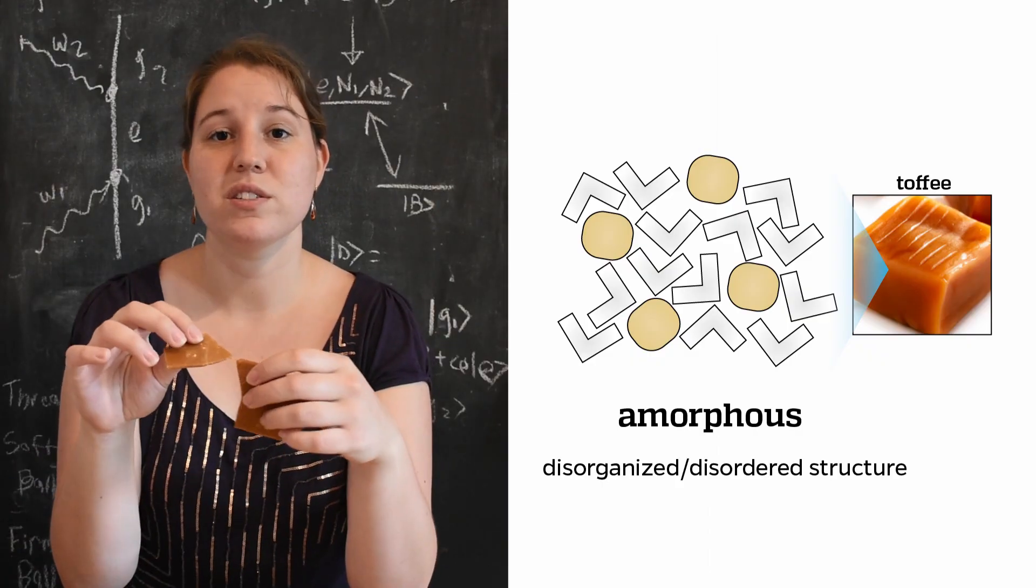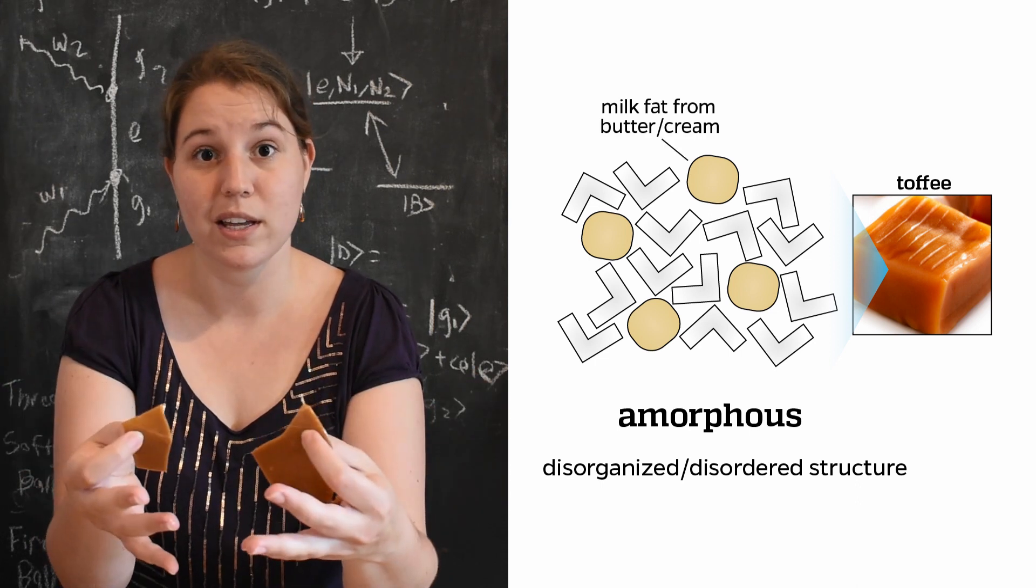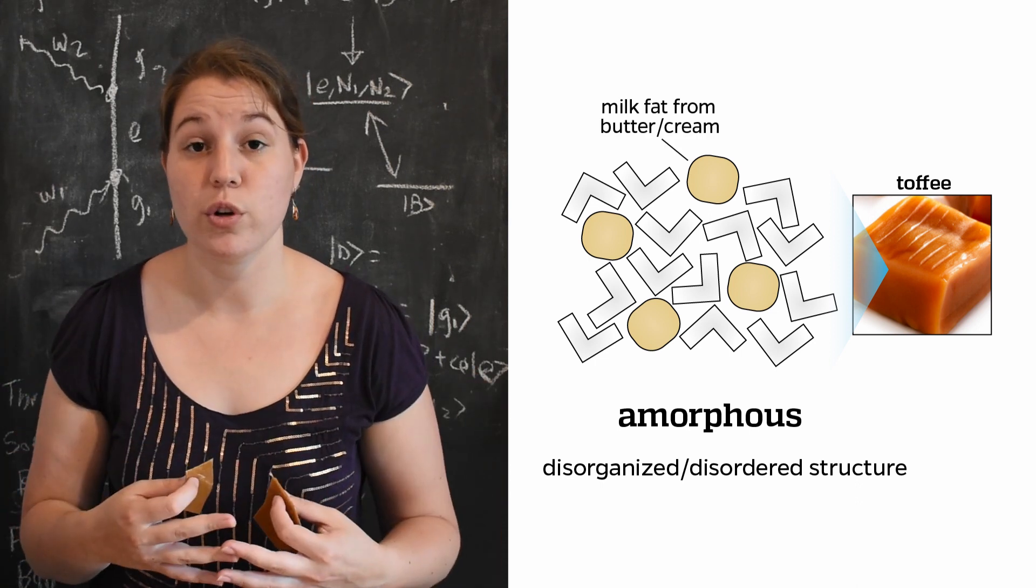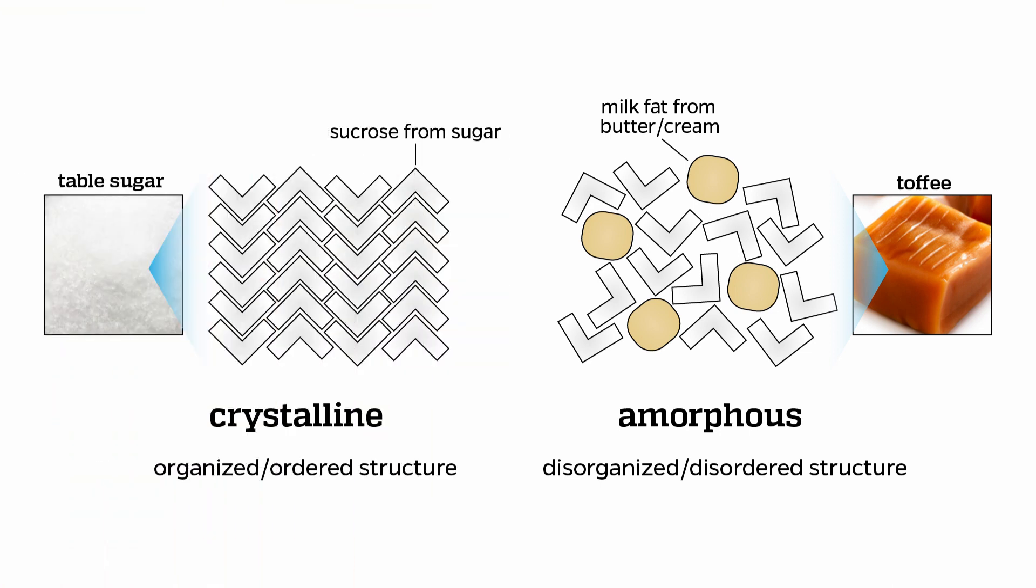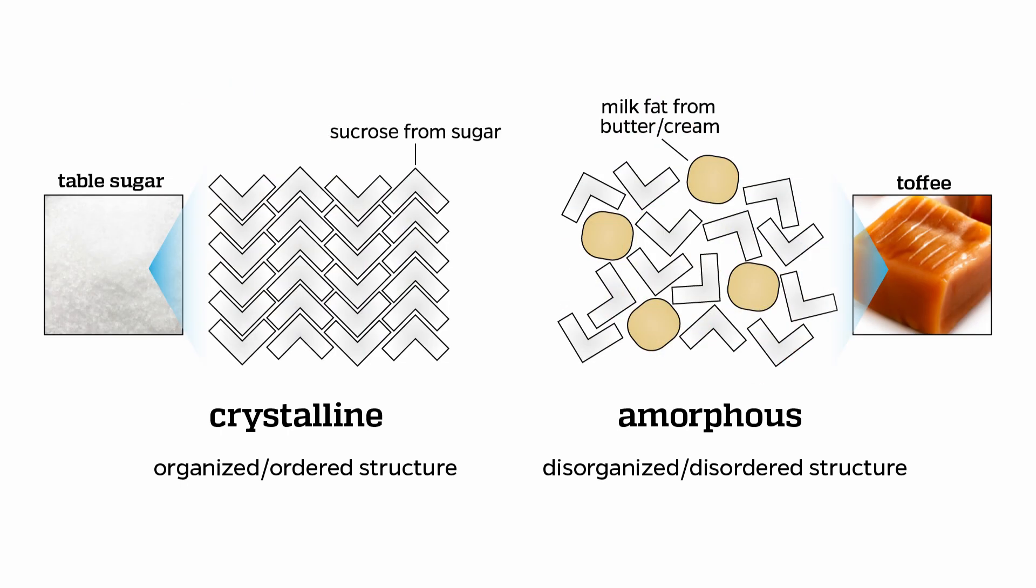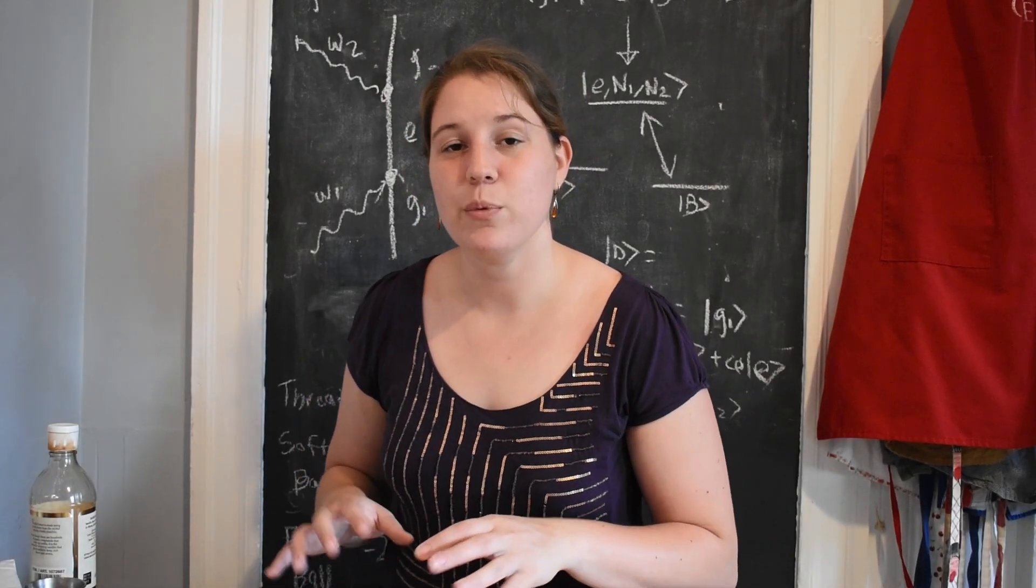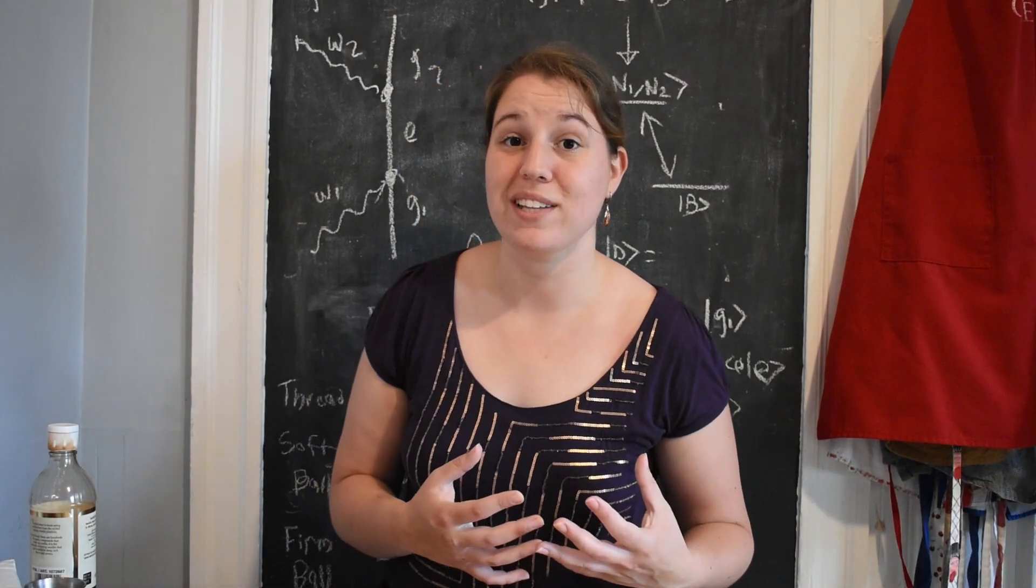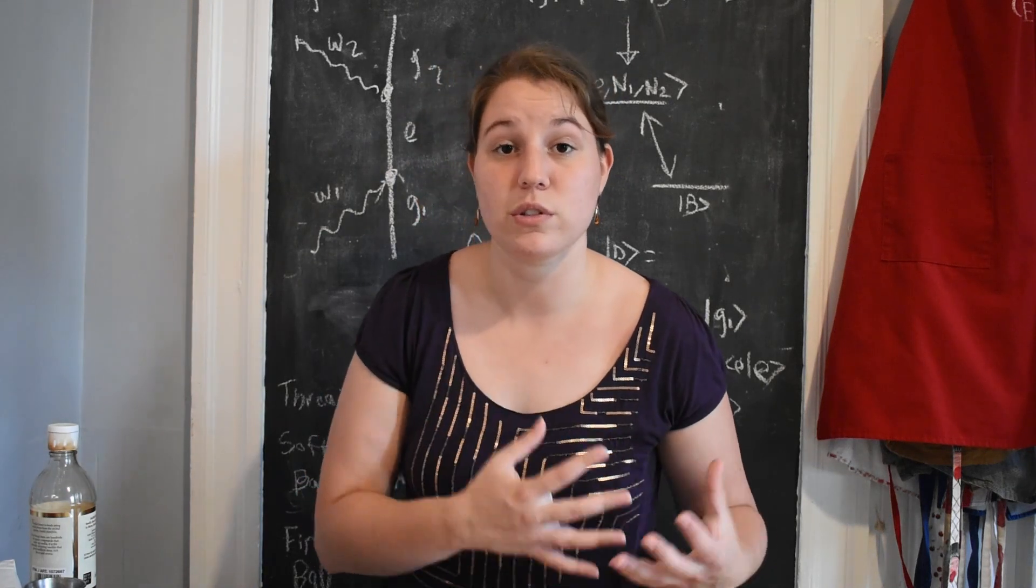This is because the butter that you add to toffee has milk fats and solids in it that keep the parts of the sugar, those sucrose molecules, from fitting together the way they would usually prefer to. A bit like sticking play-doh between your legos and then seeing the fact that they can't really build an organized structure anymore. Now this is a good example of a candy in which the recipe uses material science to keep the sugar from crystallizing and becoming a crystal solid.